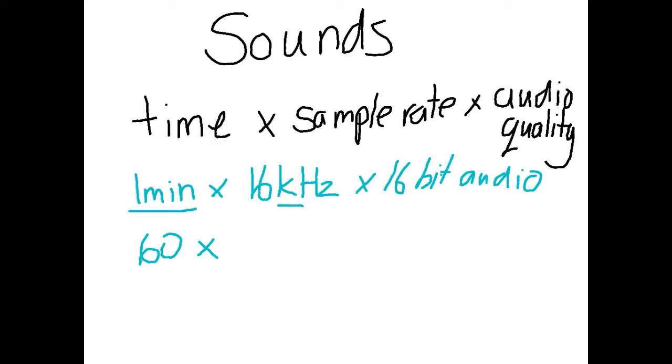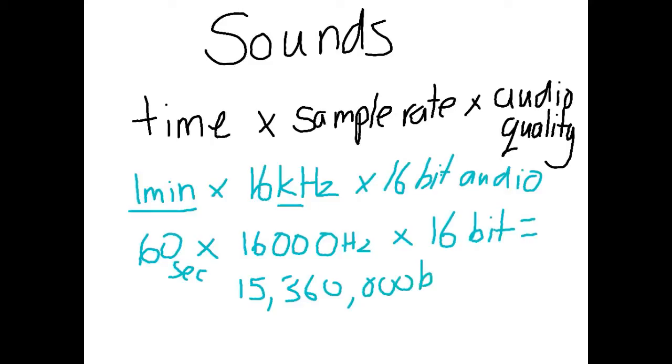And kilohertz, we actually want that in hertz. So kilo means thousand, and so times it by a thousand we end up with 16,000 hertz. So that's 60 seconds, 16,000 hertz, and it is still just 16-bit audio. And multiplying this out will give us a value in bits. By my calculations this comes to 15,360,000 bits of information.